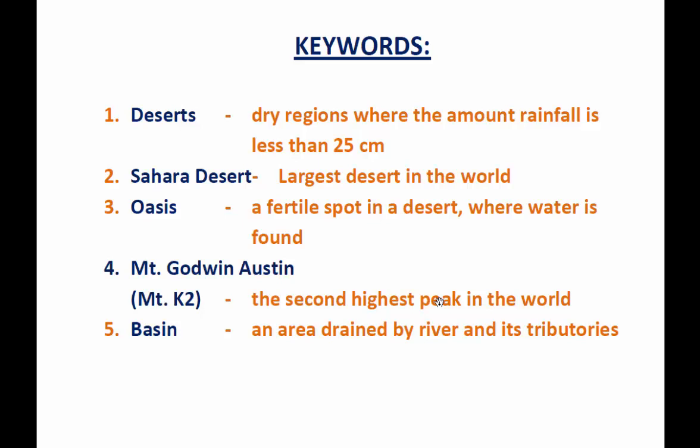The first word is desert — dry regions where the amount of rainfall is less than 25 centimeters; places where there is less rainfall. Sahara Desert, as you all know, is one of the largest deserts in the world. Oasis is a fertile spot, especially in a desert, where water is found. Mount Godwin Austin, or Mount K2, is the second highest peak in the world — the highest being Mount Everest. Basin is an area drained by a river and its tributaries.